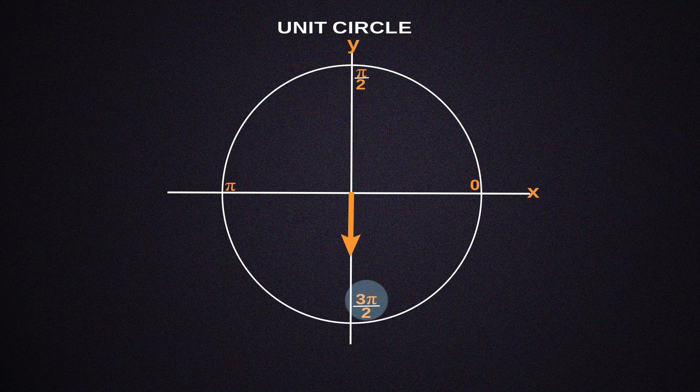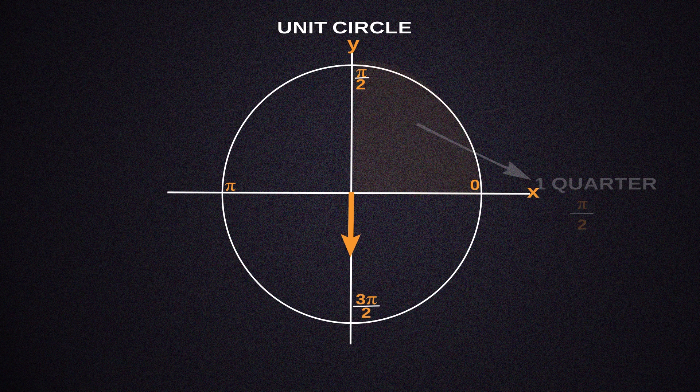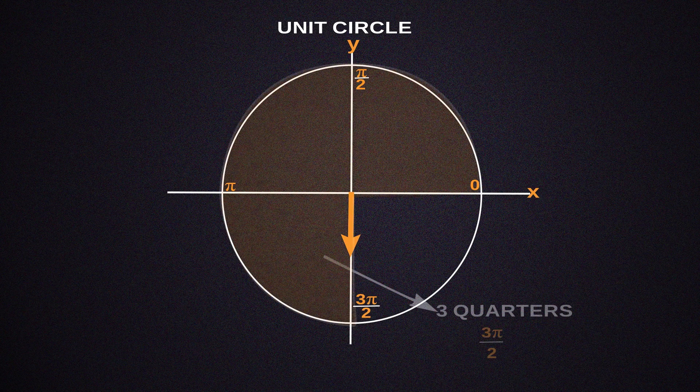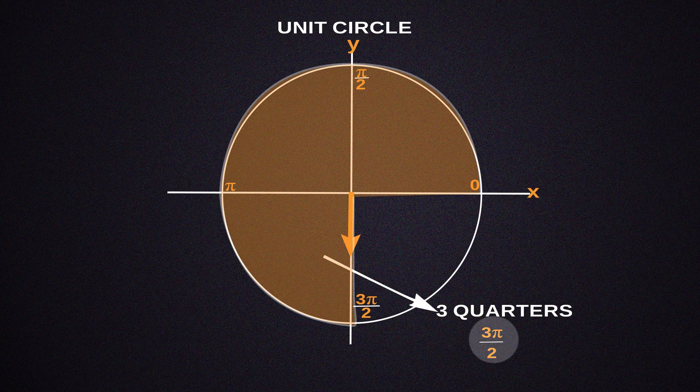The angle 3π/2 is then obtained by moving another quarter of the circle around. One quarter of the way through its diameter was π/2. The distance traveled in three quarters of the circle is therefore 3π/2.